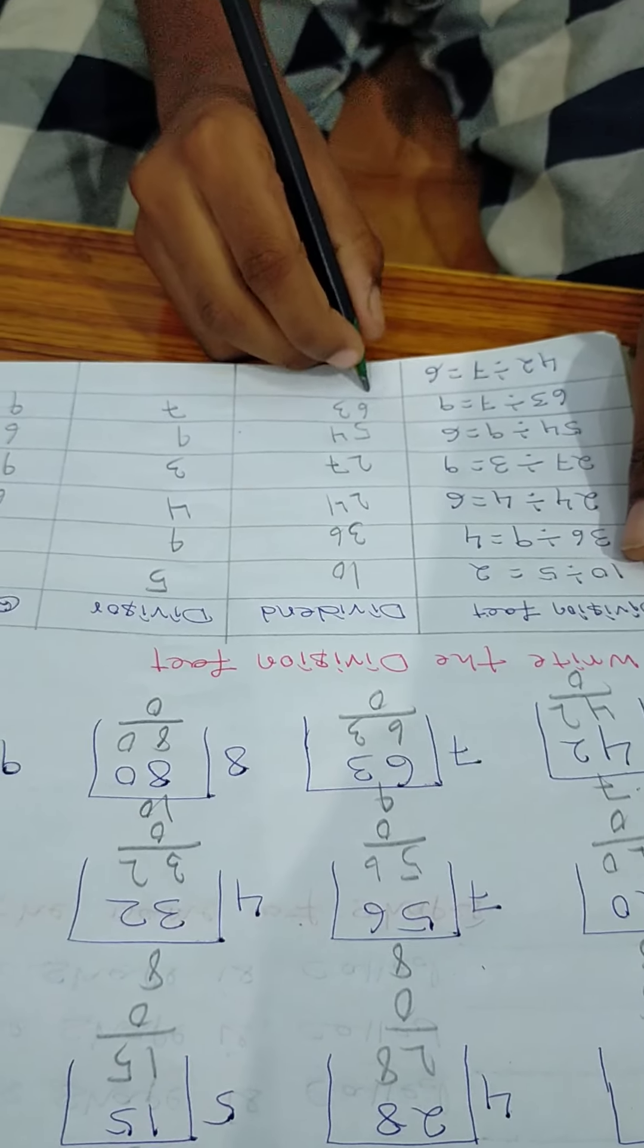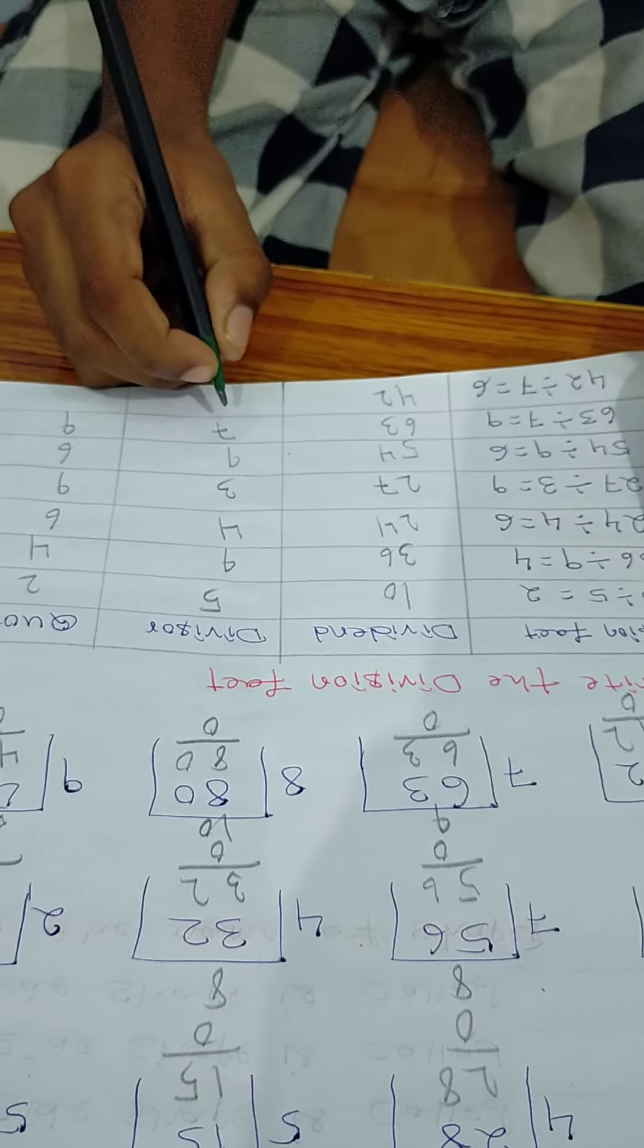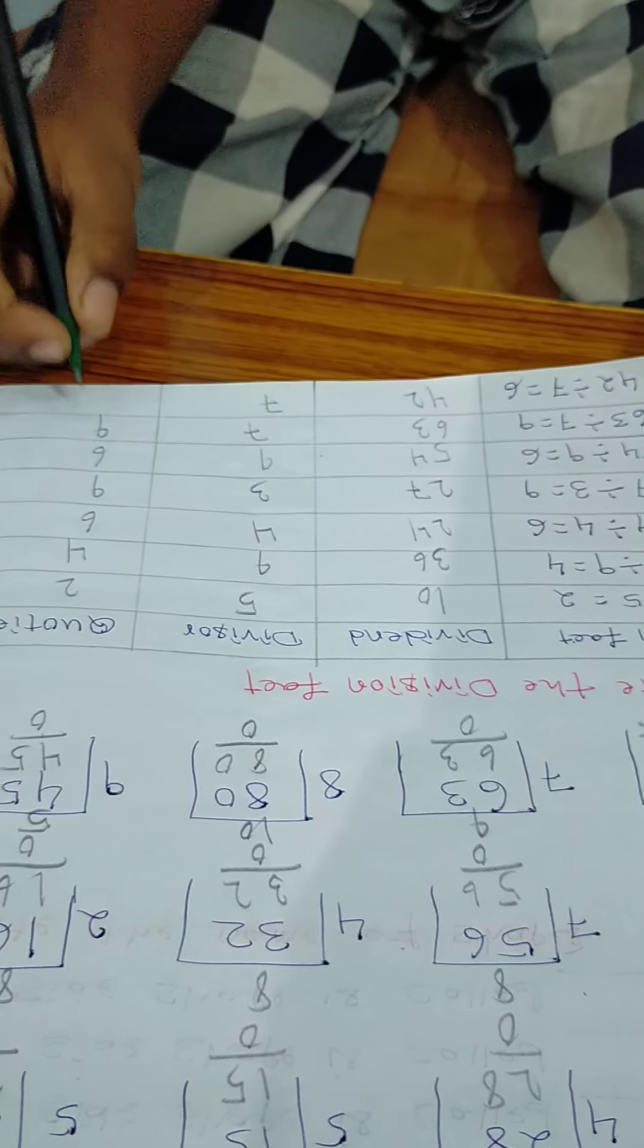42 divided 7 is equal to 6. Dividend is 42. Divisor is 7. Quotient is 6.